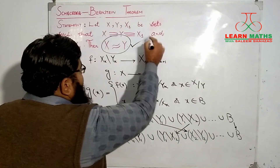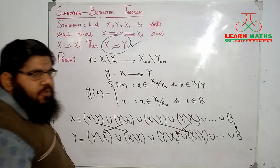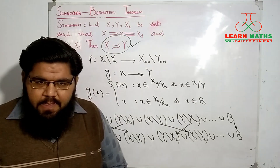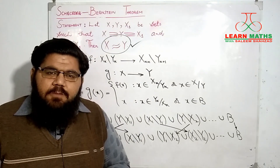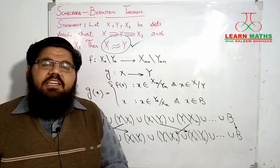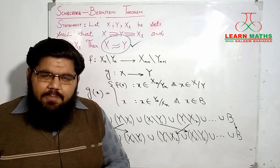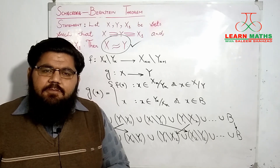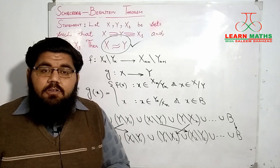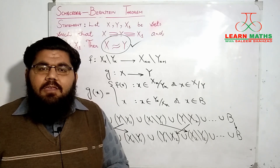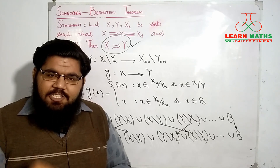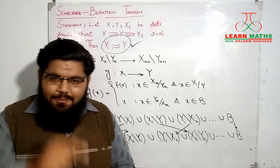Since g is a bijective map, we can conclude that X and Y are equipotent to each other, as required. Thank you so much for watching the complete video. Please subscribe to my channel, hit the bell icon so you don't miss any updates, and don't forget to leave your feedback in the comment section below.